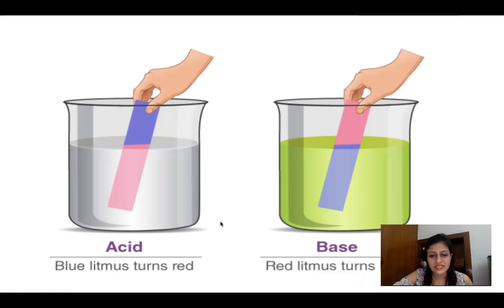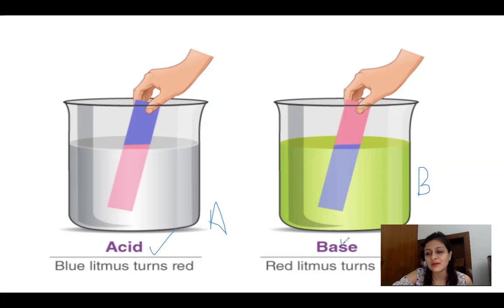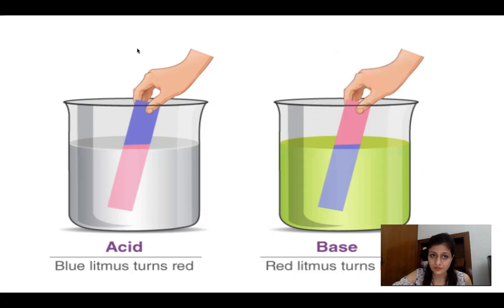This litmus paper test is a method to find out which solution is an acid and which is a base. Suppose you are given two unknown solutions A and B and you don't know which is acid and which is base. You take a litmus paper and dip it into each solution one by one. The one that turns blue litmus red is an acid, and the one that turns red litmus blue is a base.